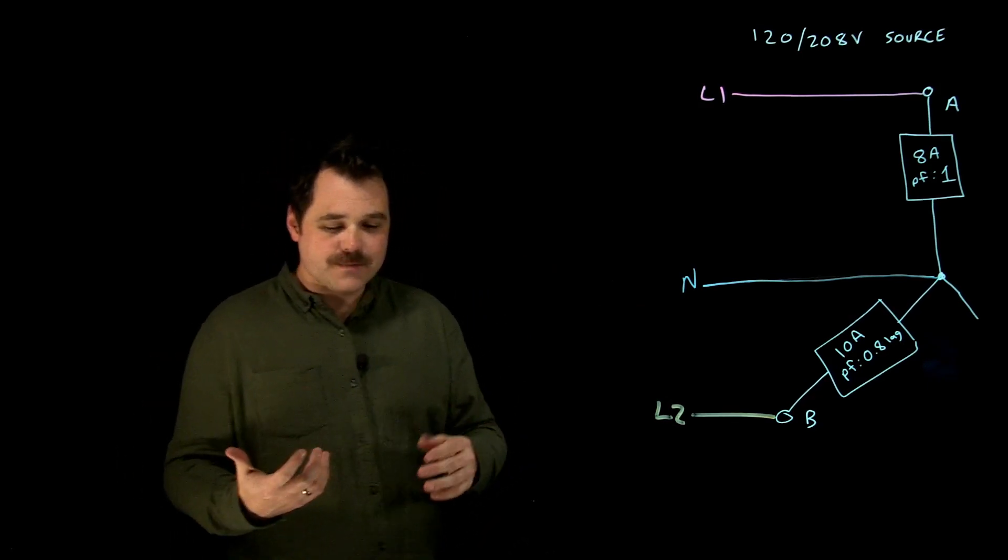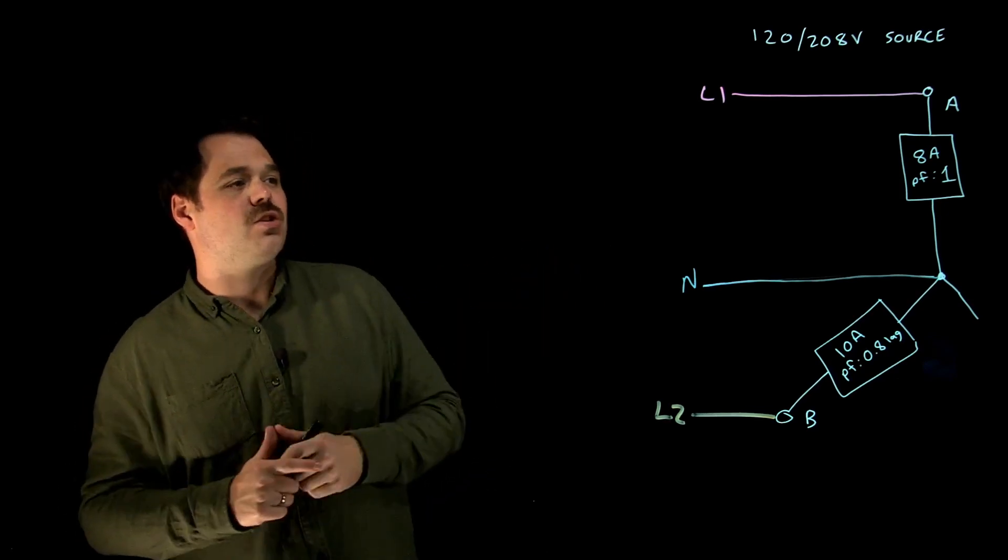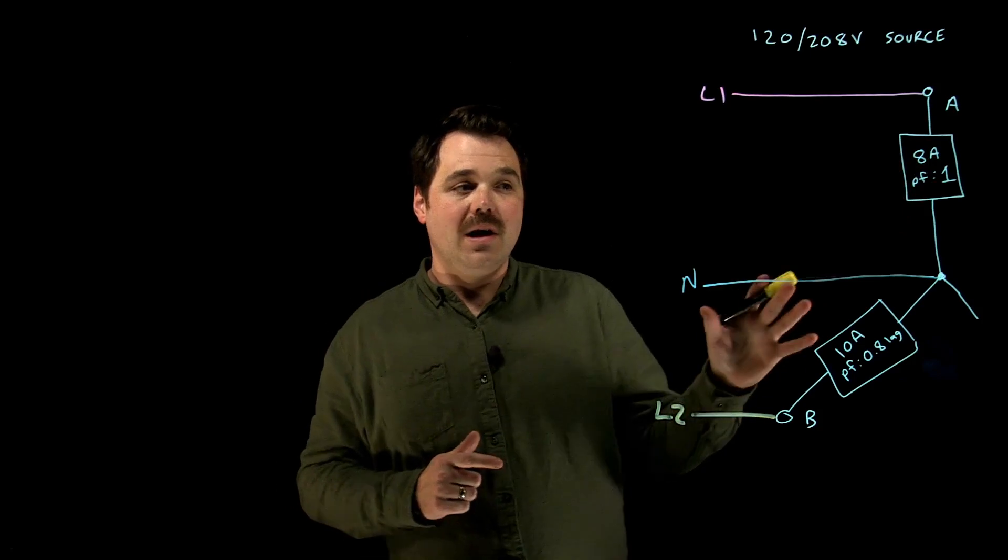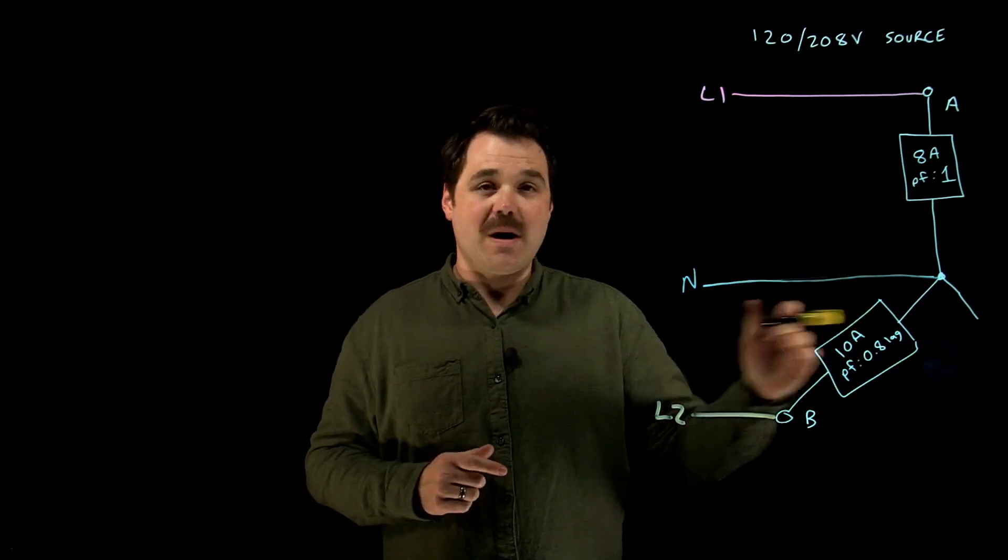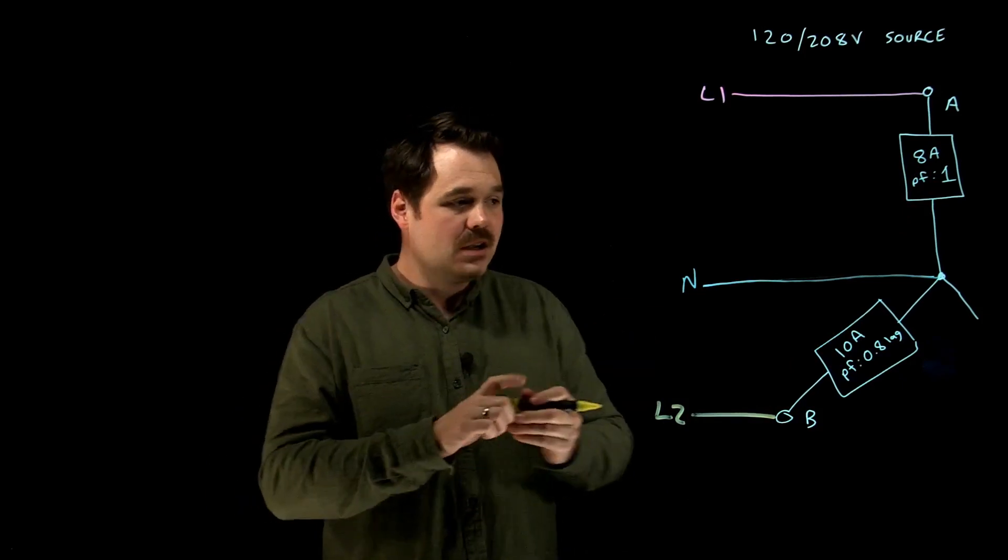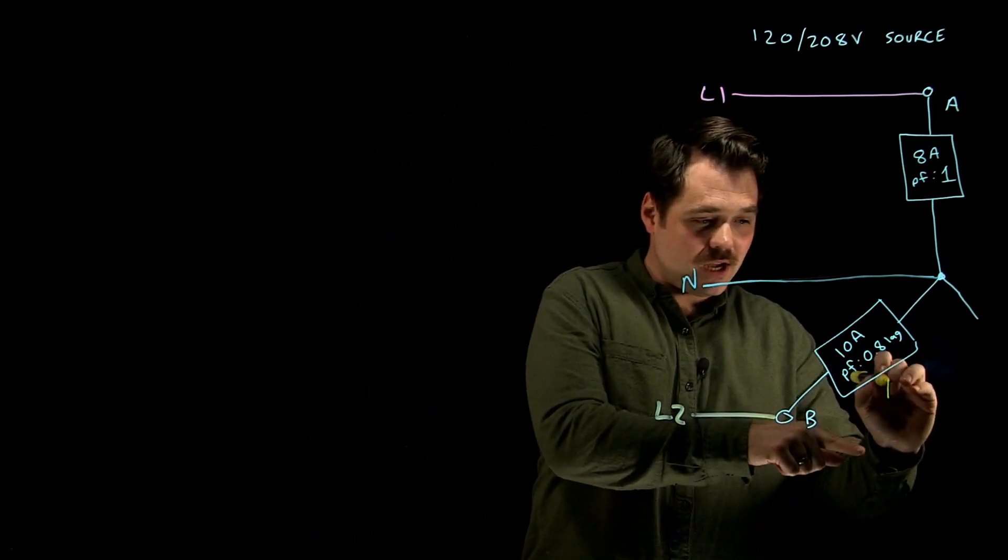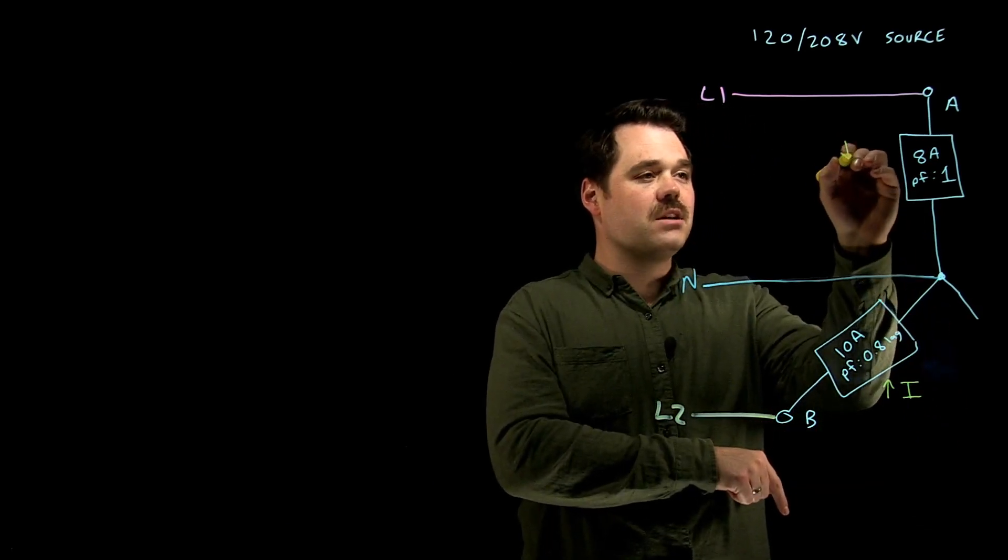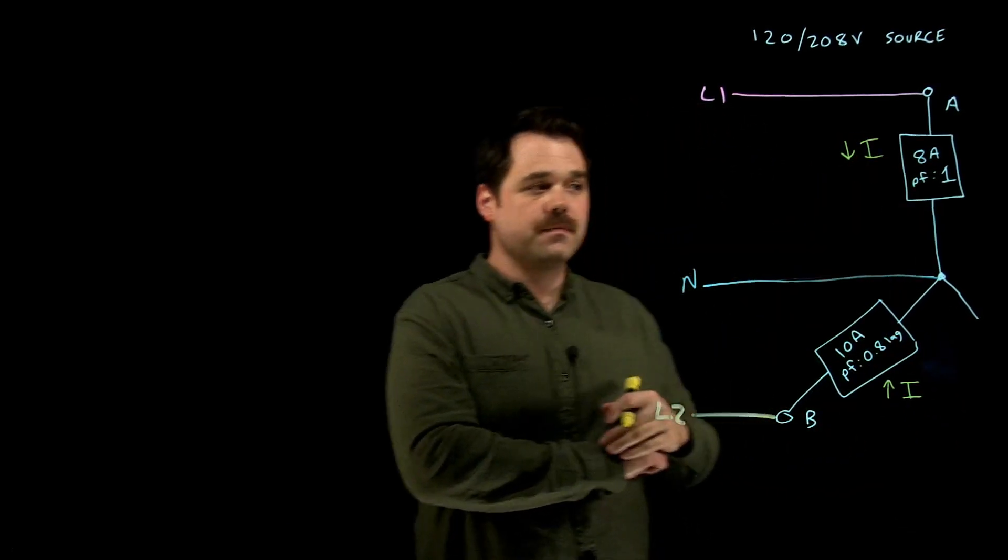Now what happens is this: when I look at this circuit, on phase A I have 8 amps power factor of one, on phase B I have 10 amps power factor point eight lag. Now power factor aside, I think we can agree that phase B is the higher current and phase A is the lower current, right?